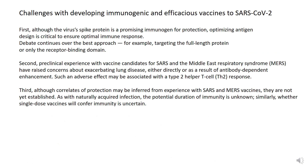There are a number of challenges with developing a safe and immunogenic vaccine specifically for SARS-CoV-2. The spike protein on the surface of the virus is a promising immunogen, and pretty much all of the companies testing vaccine candidates are using the spike protein in some version to determine whether they will protect against reinfection. Optimizing antigen design is critical to ensure optimal immune responses.